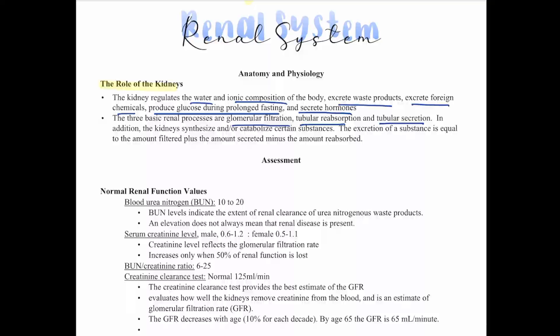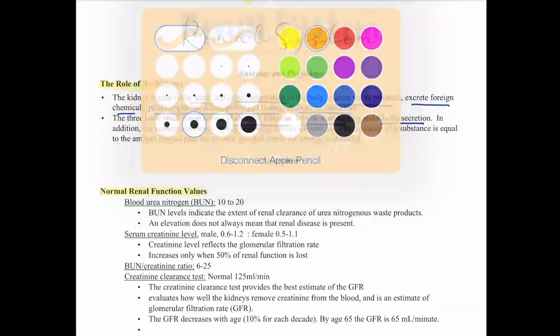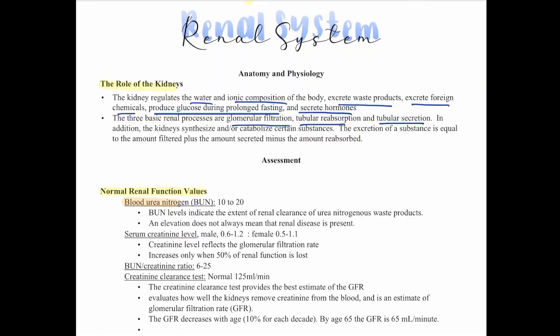Let's talk about normal renal function values. The first is blood urea nitrogen, or BUN, which is anywhere from 10 to 20. The BUN level indicates the extent of renal clearance of urea nitrogenous waste products. An elevation does not always mean renal disease is present. Then we have serum creatinine level: in a male, 0.6 to 1.2; in a female, 0.5 to 1.1.